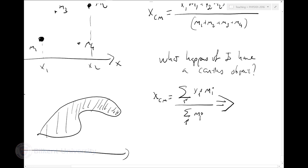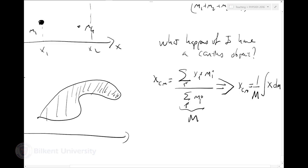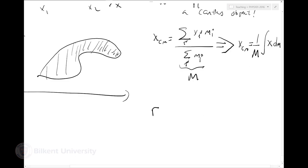That's why you're learning calculus. For a discrete object I have a sum; in the continuous limit I turn this into an integral. So x center of mass = (1/M)·∫ x dM. More generally, the center of mass position is (∫ r dM) / (∫ dM) over all the objects.